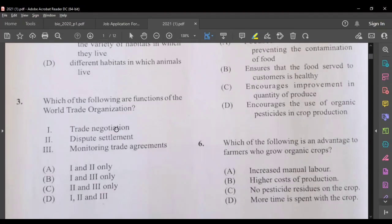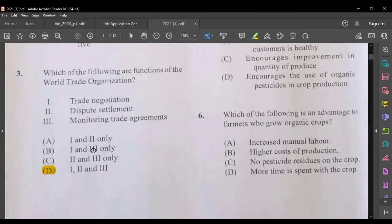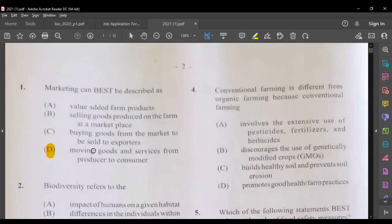Moving on to question number three, which are the following are functions of the World Trade Organization. So we have three options: trade negotiation, dispute settlements, and monitoring trade agreements. In my opinion, all three of them would be functions of the World Trade Organization.